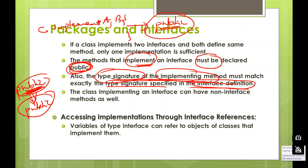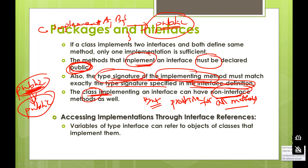A class that implements an interface is still a normal class — it does not mean it cannot have instance variables or additional methods. It can have its own instance variables and its own methods, but it must provide implementation for all the methods defined inside the interface it implements.